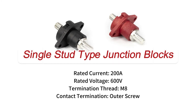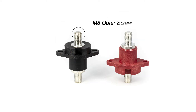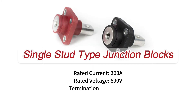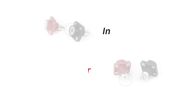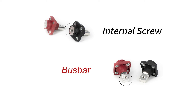The next one is the 200A Copper Through-the-Wall Junction Block. Here you can see it has outer screws on the top and bottom. The following kind is another 200A Copper Through-the-Wall Junction Block, differing from the previous one in that the top has an internal screw and the bottom is the bus bar.